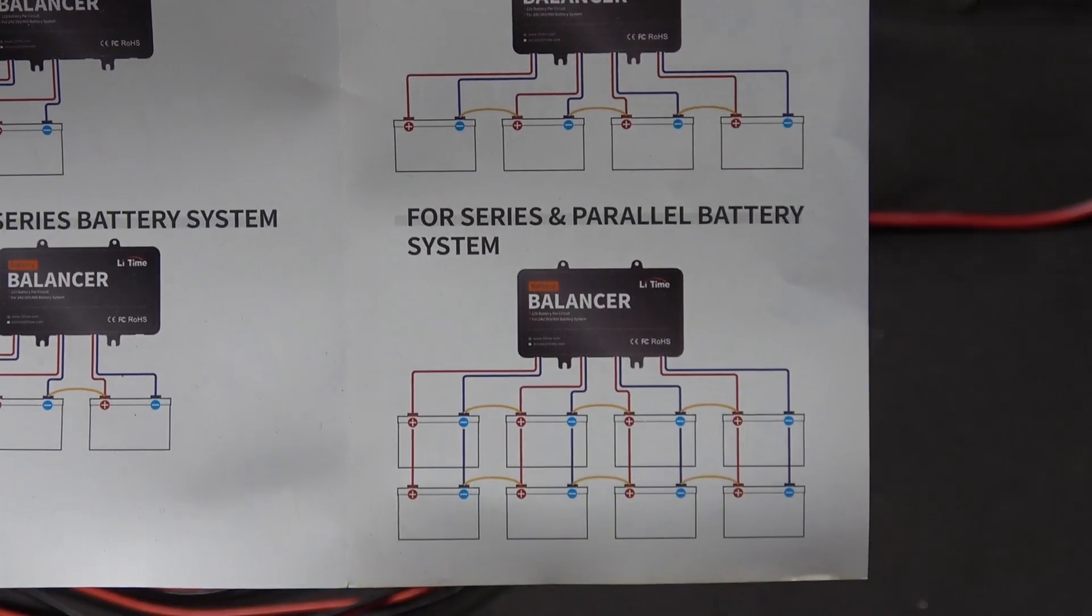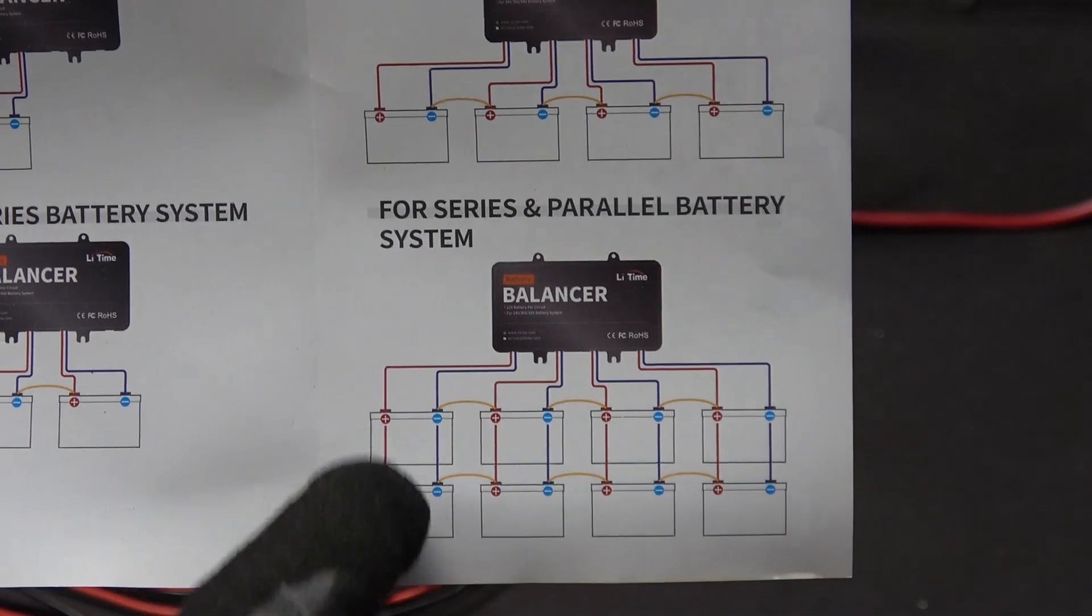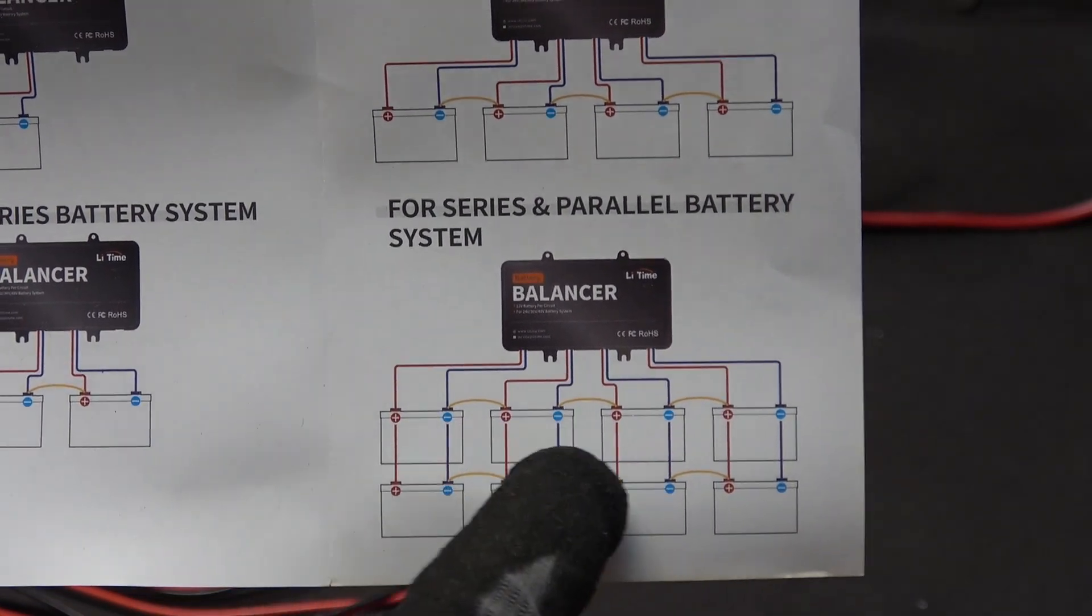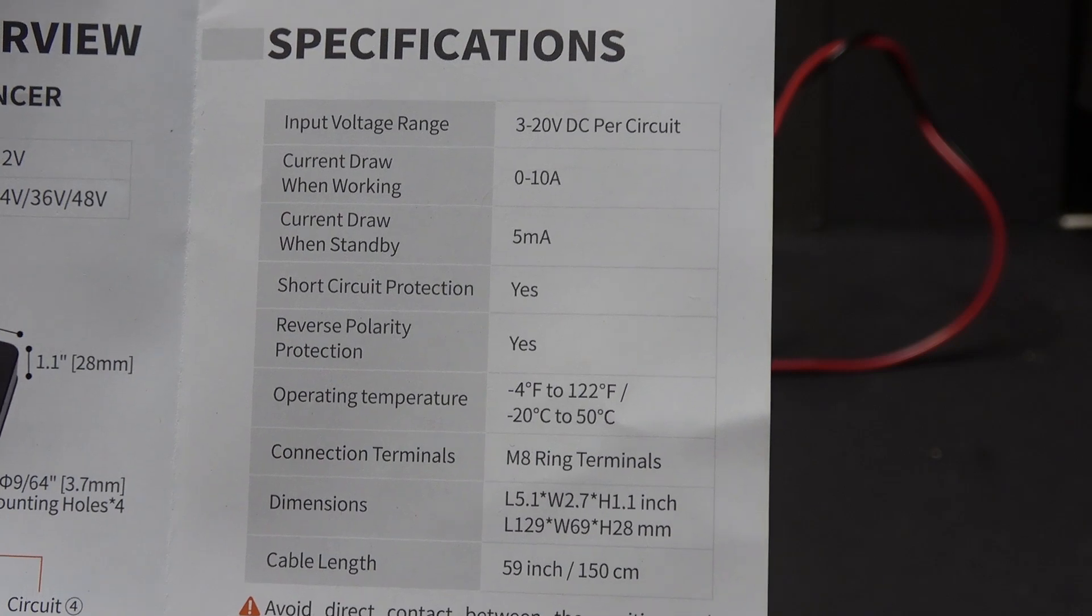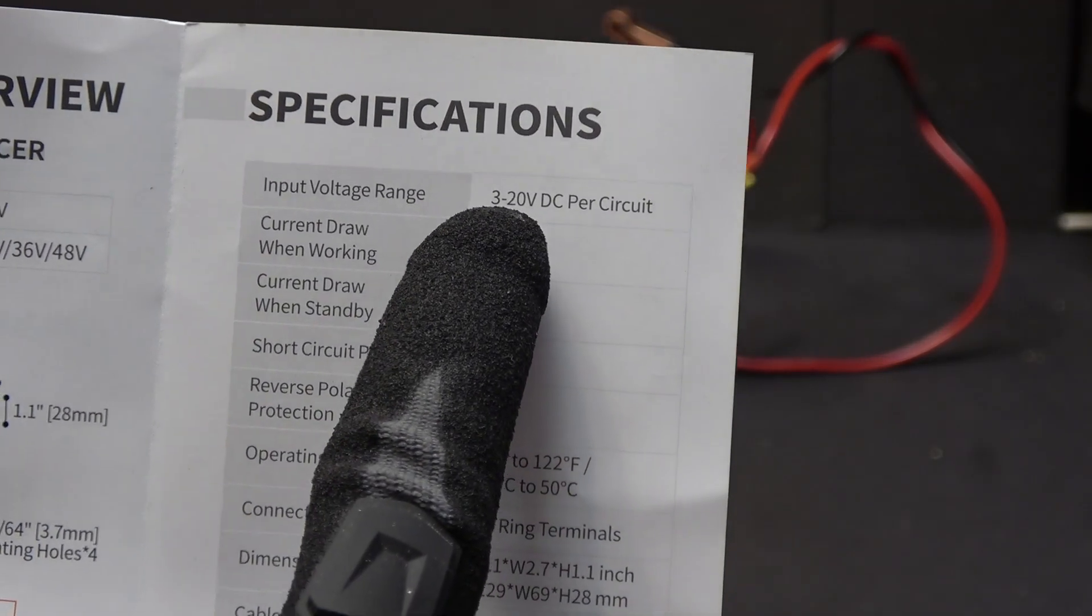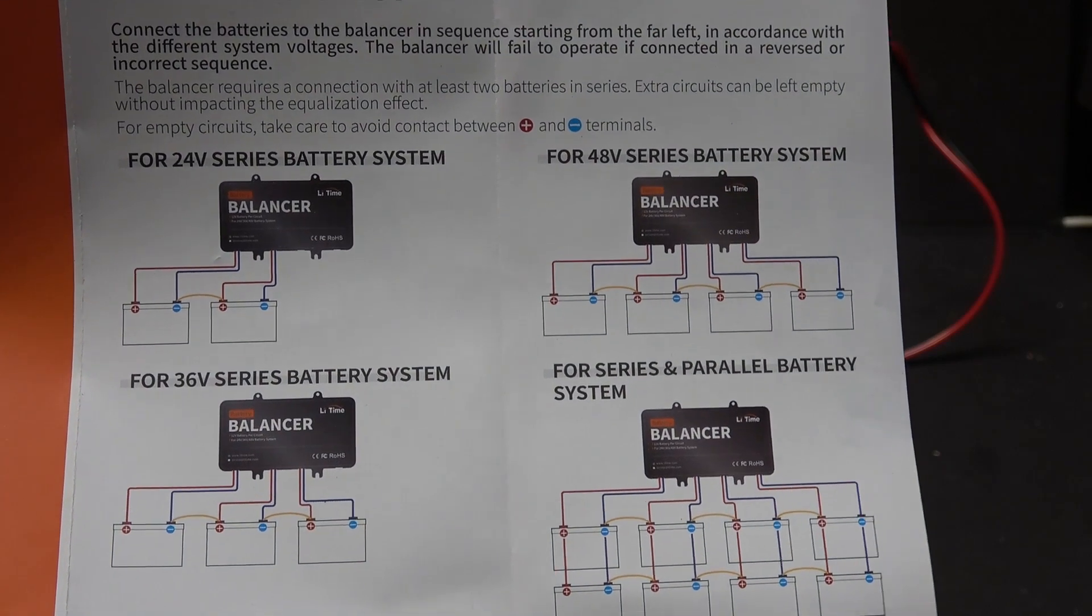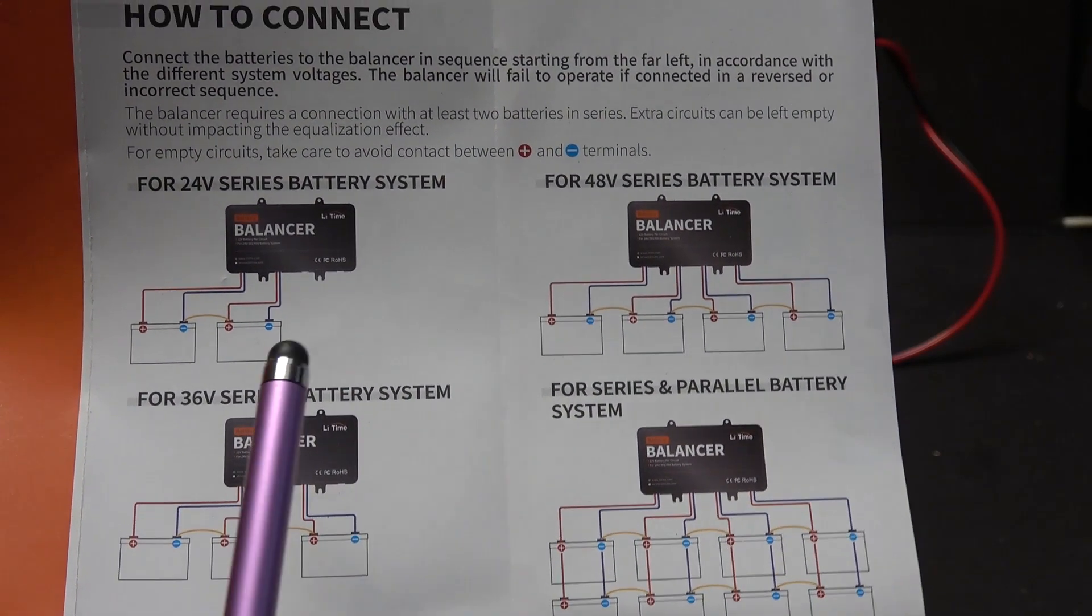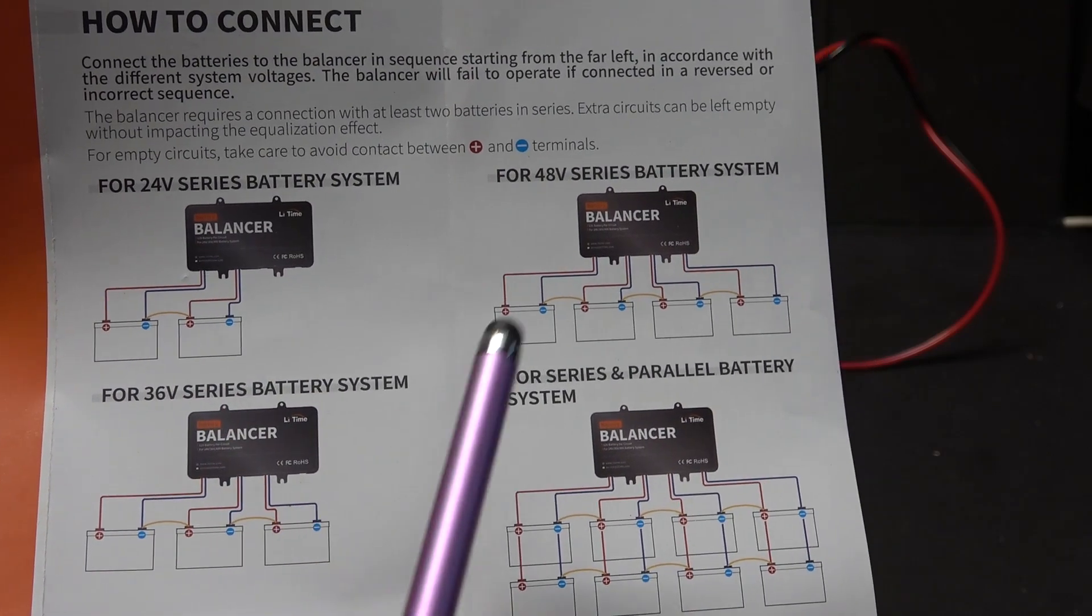And down here is also a 48 volt system, but we got 2P, so two batteries in parallel and it's still 48 volts. Here are the specs of the system. It can operate from 3 to 20 volt DC. However, in the user manual, it only shows starting from 24 volt, so we got 24, 36, and 48.